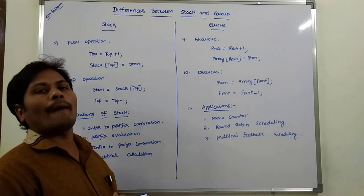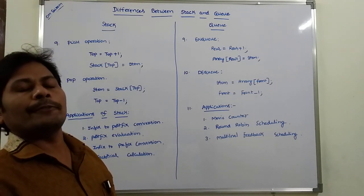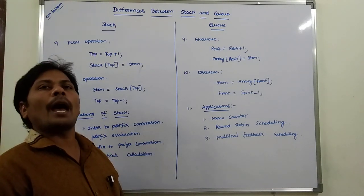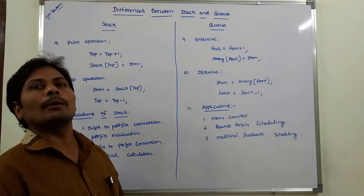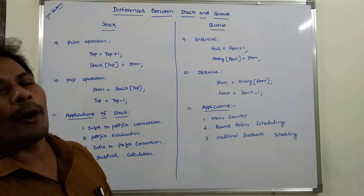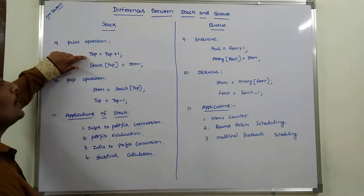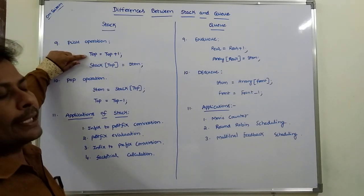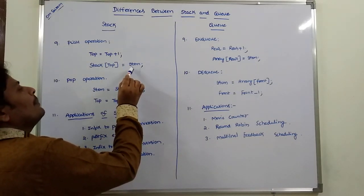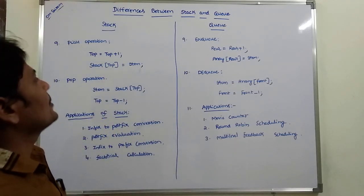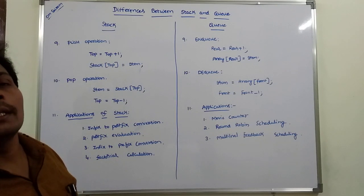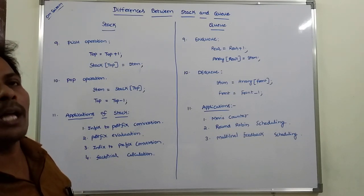How to perform the push operation on a stack: push operation is used for inserting an item or element into the stack. First, we have to increment the top — that is, top = top + 1. Next, we have to insert the item into the top of the stack — that is, stack[top] = item. So first increment the top pointer, then insert the element.